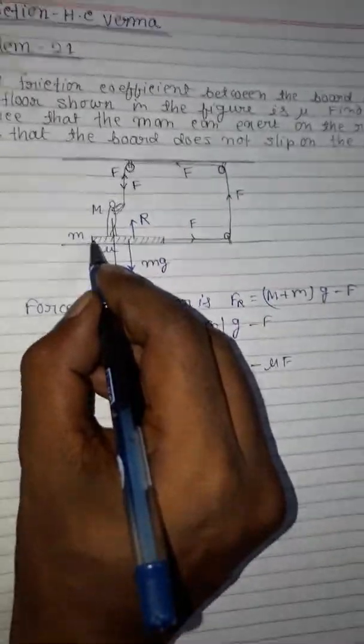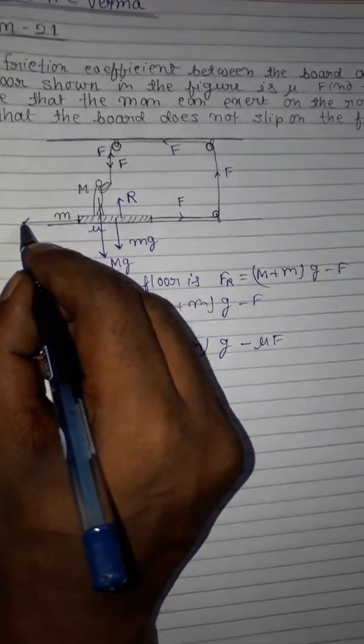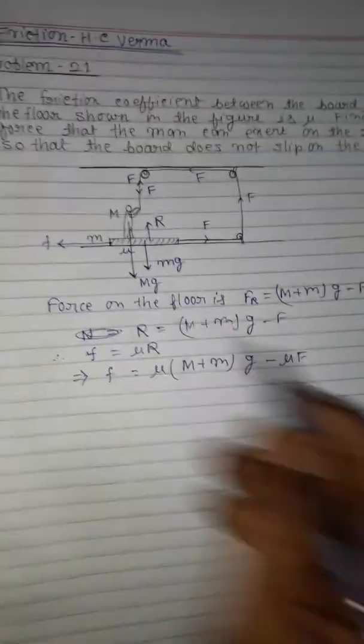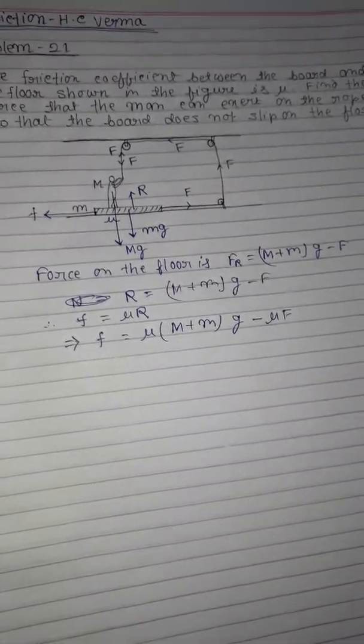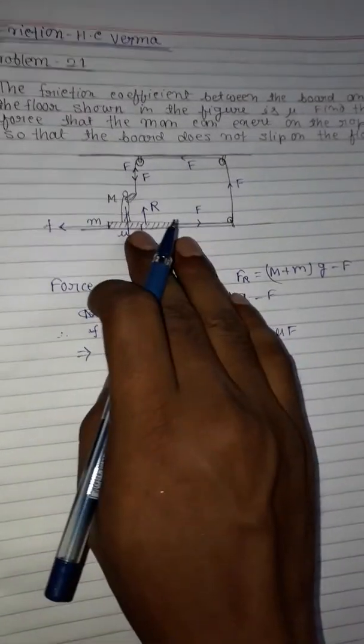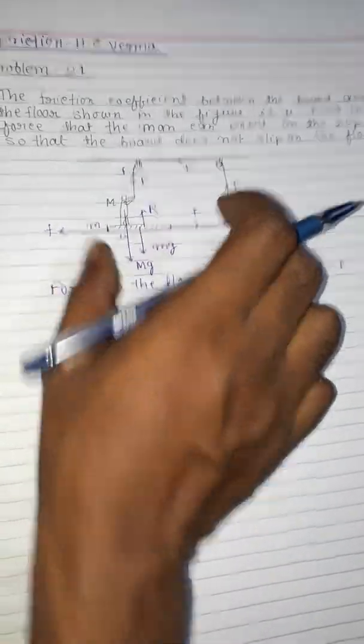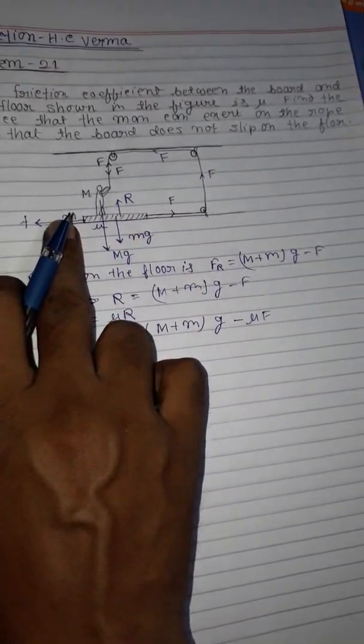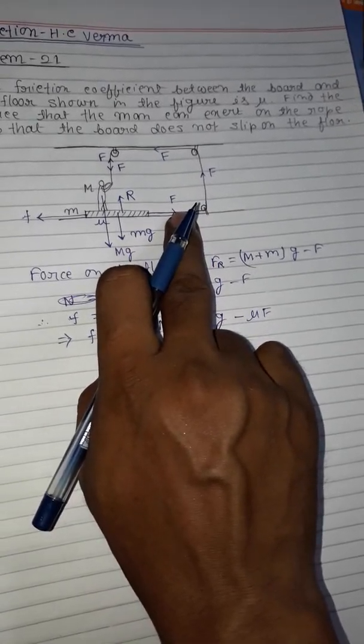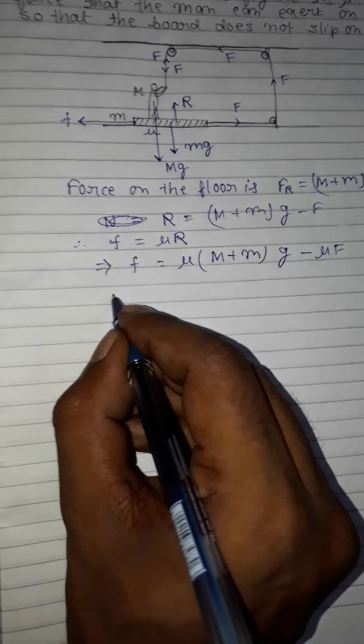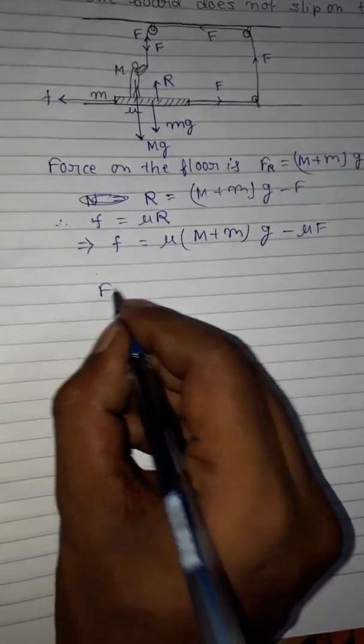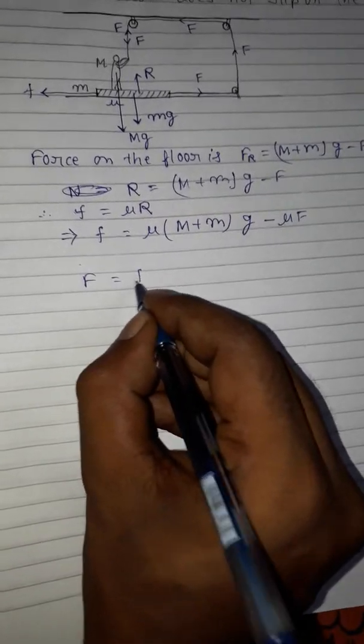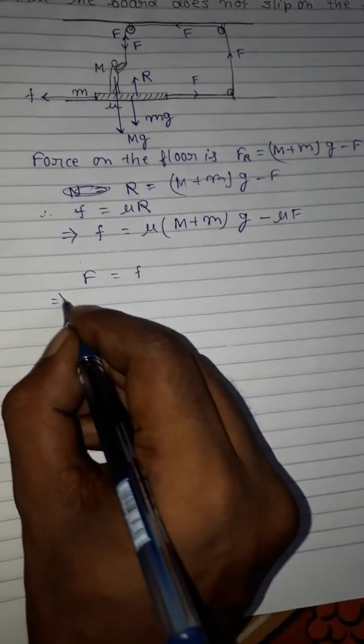The frictional force acts in this direction. Now the condition for the board not to slip is that the frictional force must balance the applied force F. So our condition is F equals the friction force.